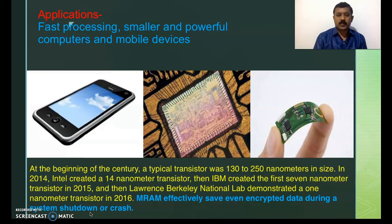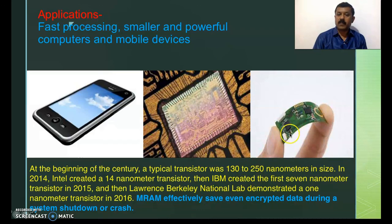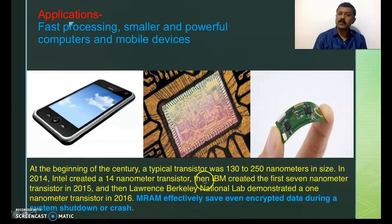We are achieving greater speeds and also advancing memory devices. Magnetic RAMs created with nano technology can save encrypted data even during a system shutdown or crash. Unlike traditional ROM, these magnetic RAMs are flexible — they can be bent and are not affected by crashes. Such materials are already developed and available in the market.